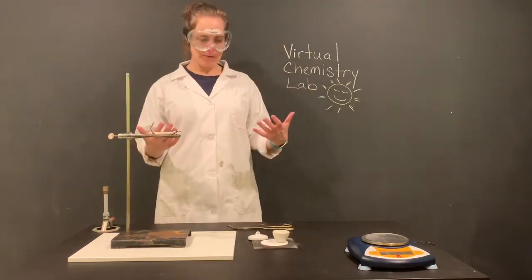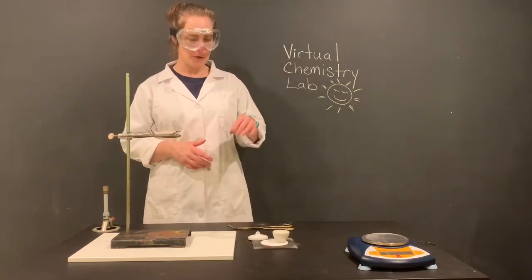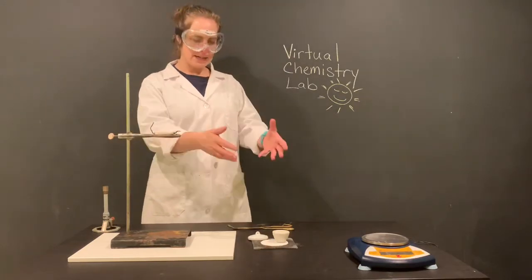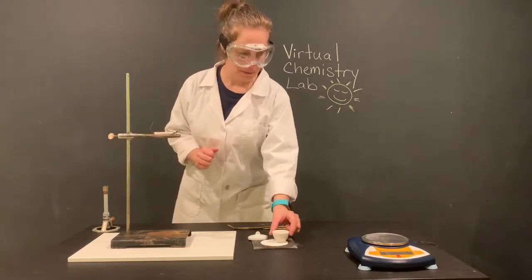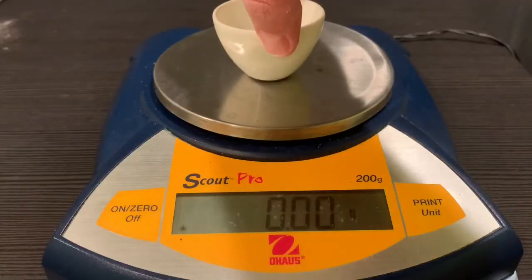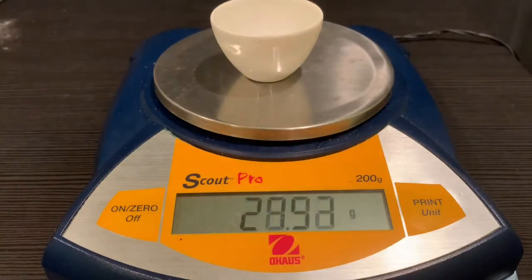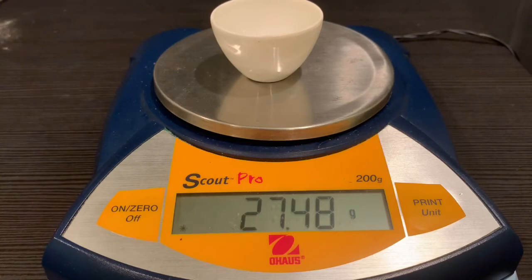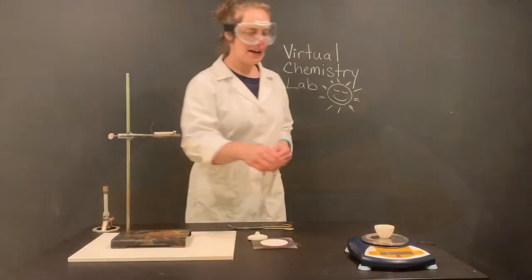So what we're going to do first is we are going to go ahead and take the mass of our empty crucible. So as I come in here to grab this, I'll take a moment and you'll record that mass. Now when you record the mass, make sure you're recording all the digits.